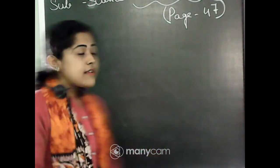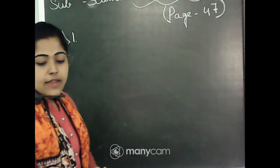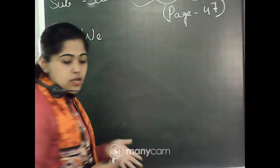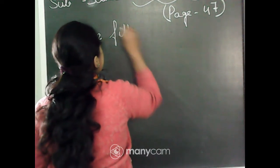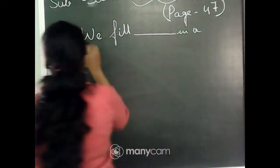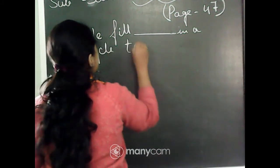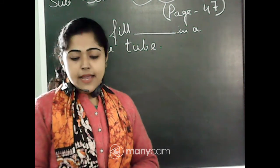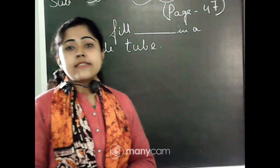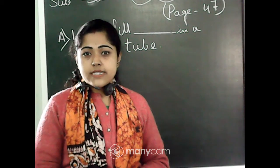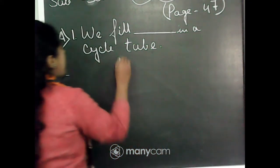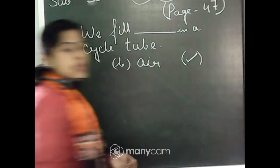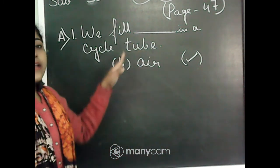Let's start question number 1: 'We feel dash in a cycle tube.' I am writing in full sentence, so you have to write in full sentence also. The three options are: Option A — water, Option B — air, Option C — food. Which thing do we feel in a cycle tube? Yes, that is air. Option B, air, is the correct answer. We feel air in a cycle tube.